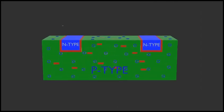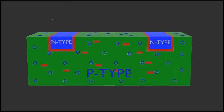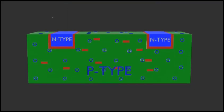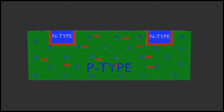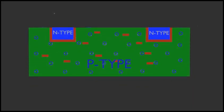Let's start from the enhancement type n-channel MOSFET structure and working principle. Here is the structure of the n-channel enhancement type MOSFET. The channels are made up of highly doped n-type semiconductor, shown in blue. The substrate is made up of lightly doped p-type semiconductor, shown in green. The majority carriers in the substrate are holes, and electrons are the minority carrier.